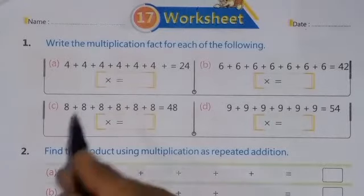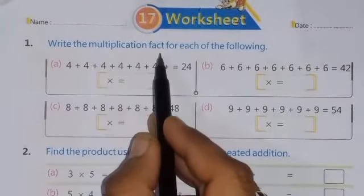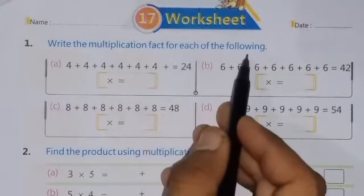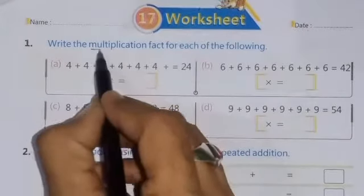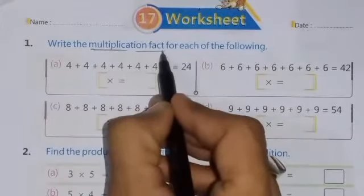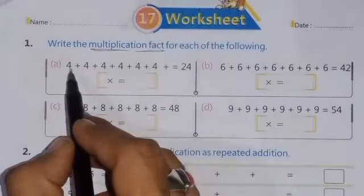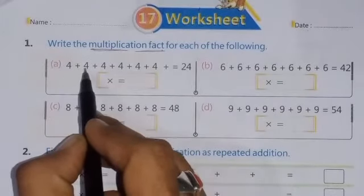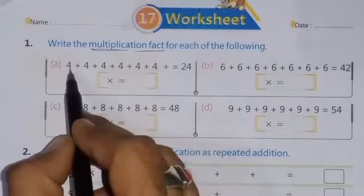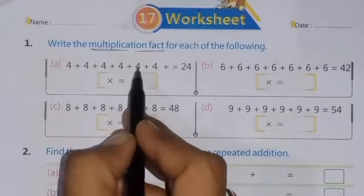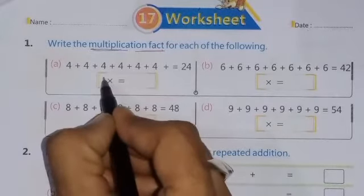The very first question is given: write the multiplication fact for each of the following. What is the fact of multiplication? Here you can see that the number 4 is continuously adding. How many times? 1, 2, 3, 4, 5, 6. Six times.